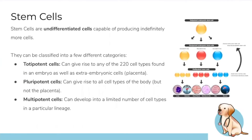Stem cells are undifferentiated cells that can produce large amounts of cells. They fall into three categories: totipotent cells can give rise to any cell in the body; pluripotent cells can give rise to all cells except those in the placenta; and multipotent cells can develop into certain cell types but can make an infinite amount of those specific cells.